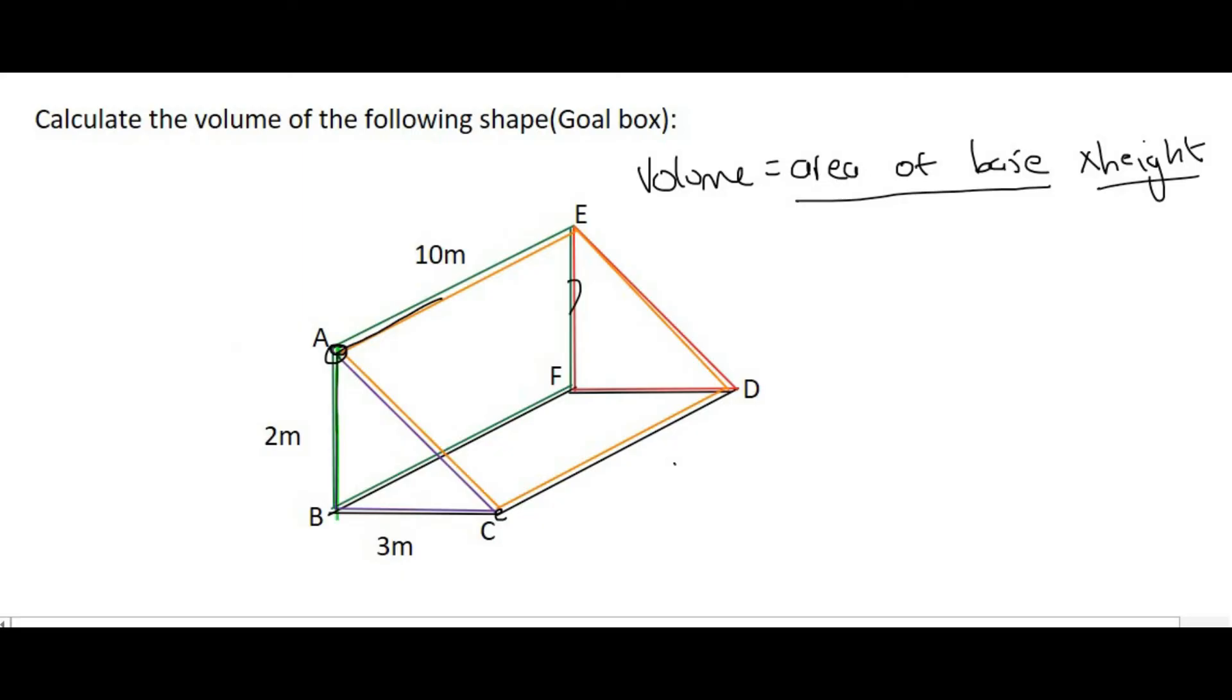So the ideal choice is going to be this base over here. And so the area of our base, well that's just going to be the triangle, so that's just going to be half times base, which is 3, times by height, which is 2.